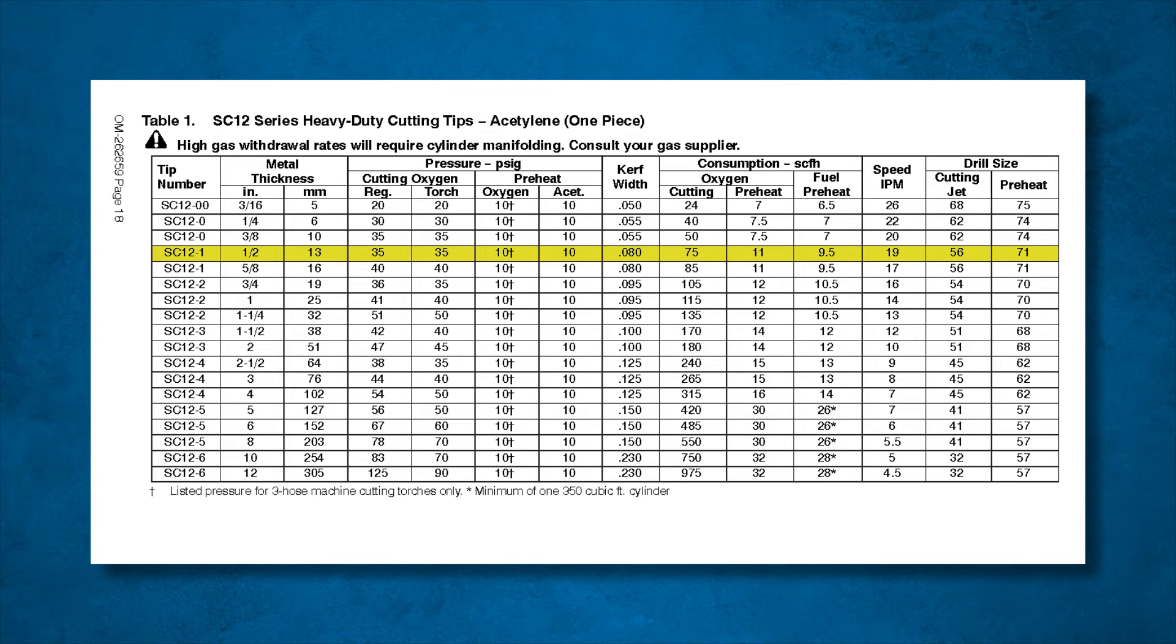For example, Smith's SC-12-1 cutting tip cutting half-inch thick metal will have a delivery pressure requirement of 10 PSIG and a consumption or flow requirement of 9.5 for the fuel regulator. For oxygen regulators, you will want to add both cutting and preheat consumption together to get the flow requirement. Once you have these numbers, you can look at your flow chart.